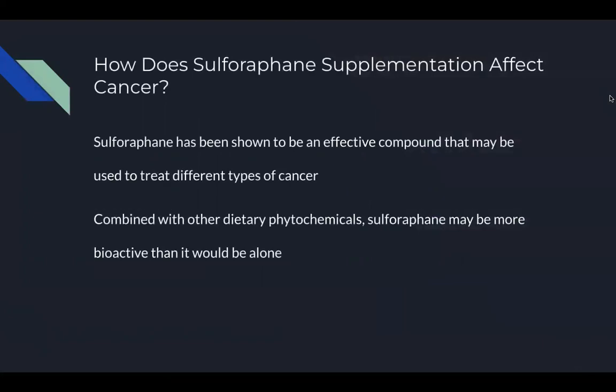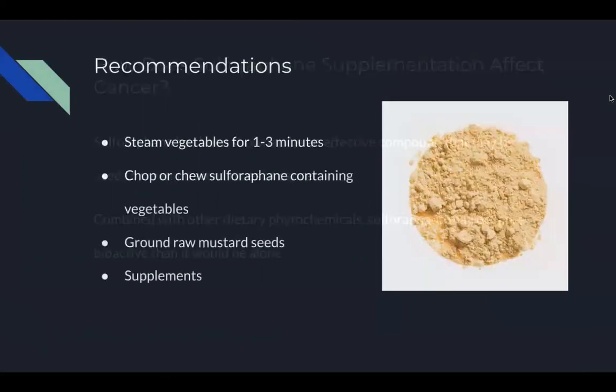In conclusion, sulforaphane has been shown to be an effective compound that may be used to treat different types of cancer. Combined with other dietary phytochemicals, sulforaphane may be more bioactive than it would be alone. Some recommendations to increase sulforaphane intake include steaming vegetables for one to three minutes, chopping or chewing sulforaphane-containing vegetables, adding ground mustard seeds to food, and taking different supplements containing sulforaphane.